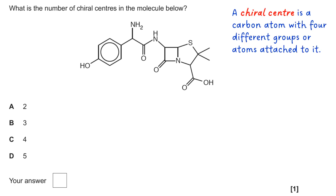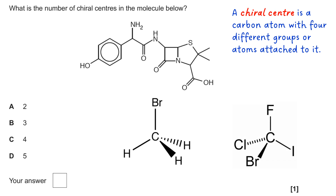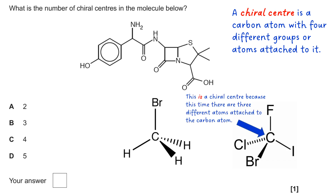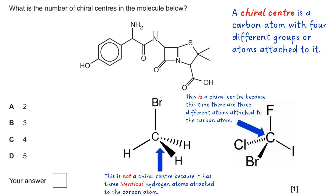A chiral center is a carbon atom with four different groups or atoms attached to it. Looking at two examples: the one on the right is a chiral center because there are four different atoms attached to the carbon, but the one on the left is not a chiral center because it has three identical hydrogen atoms attached to the carbon.